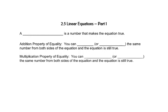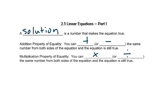In this section, we'll start looking at how to solve an equation. A solution is a number that makes the equation true. The addition property of equality says that you can add or subtract the same number from both sides of the equation, and the equation still remains true. The multiplication property of equality says that you can multiply or divide the same number on both sides of the equation, and the equation is still true.